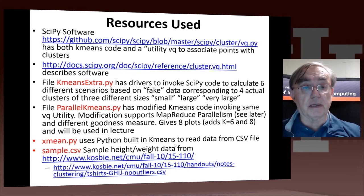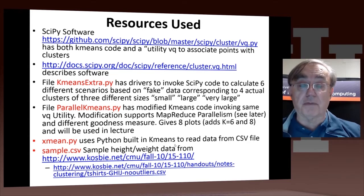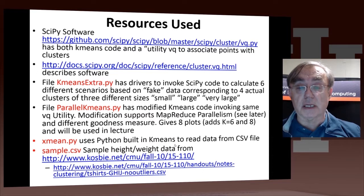There are four files provided with this section. The file kmeans-extra.py, we don't run in this class, but it's useful there. It invokes the actual SciPy code. It calculates clustering based on fake data, which is used in a later file, parallel-kmeans.py, which generates four actual clusters of three different sizes: small, large, and very large.